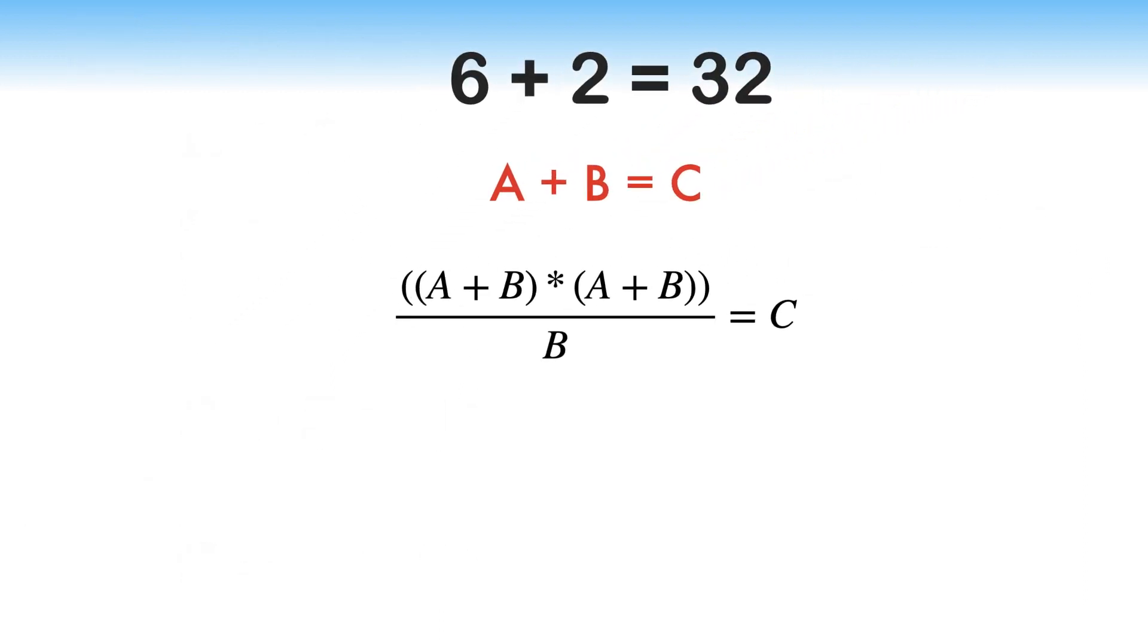In the fourth equation, A equals 6, B equals 2. After substituting the value and simplifying, the equation becomes 8 times 8 over 2. 8 times 8 equals 64. 64 over 2 equals 32, which is RHS of the equation 4.